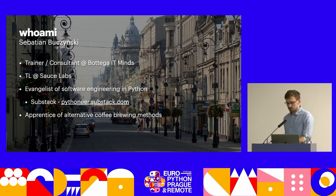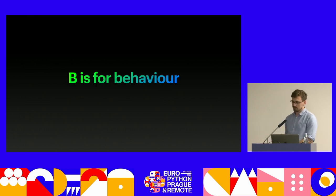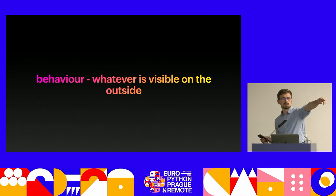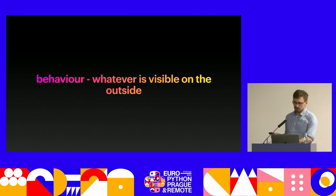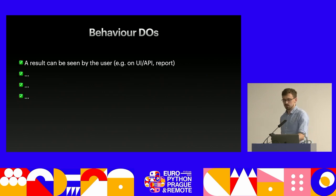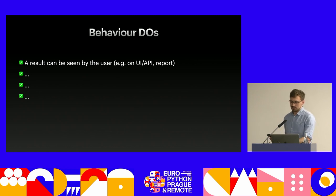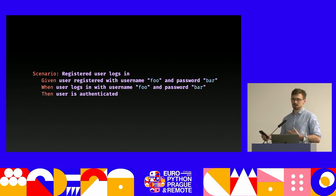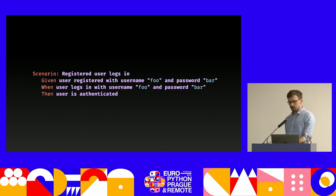Going back to BDD: the B stands for behavior. We need to define what that actually is. My simple definition is: whatever is visible on the outside of the system, or outside whatever scope you're testing. An example of behavior is something the user can see — on another screen, in a report, or after some action. A classic example: how do we spec a registration feature? Some people test via the database, but that's not the behavior — a user cannot look into the database.